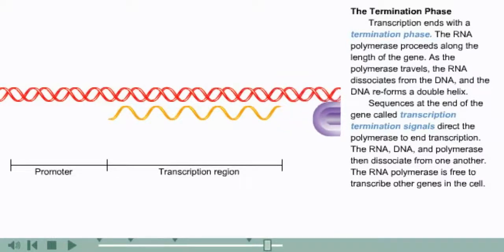called transcription termination signals direct the polymerase to end transcription. The RNA, DNA, and polymerase then dissociate from one another. The RNA polymerase is free to transcribe other genes in the cell.